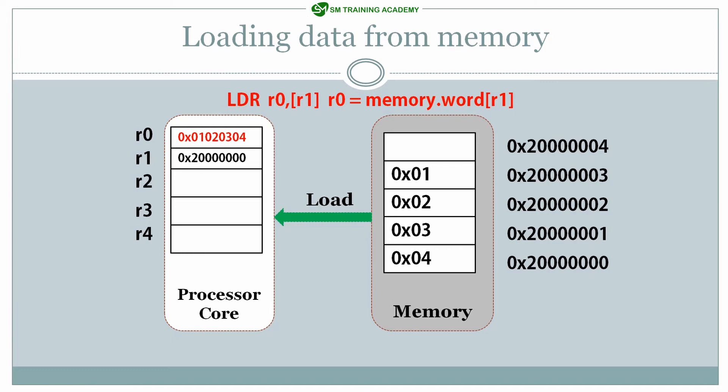LDR R0, [R1] writes the data at the address specified in register R1 into register R0. In R1 we have the memory address 0x20000000, and at that memory address we have the value 0x04030201 consecutively. Those 4 bytes are directly written to the R0 register using the instruction LDR R0, [R1]. I hope you understood the loading operation using assembly level coding.